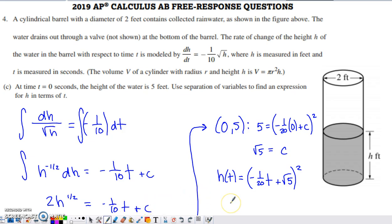The last part of this tells us that at time zero, the height of the water is 5 feet. It says to use separation of variables to find an expression for h in terms of t. We're basically solving a differential equation here. If I separate my variables, I'm going to get this square root of h over with the dh by dividing by it, and I'm going to get the dt over to the right-hand side by multiplying by it.